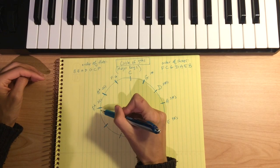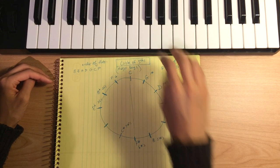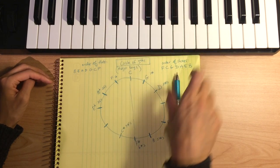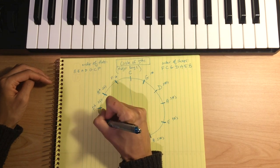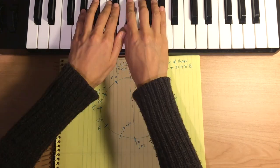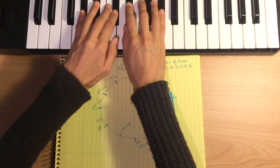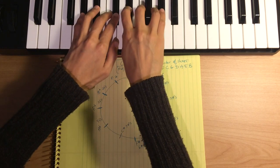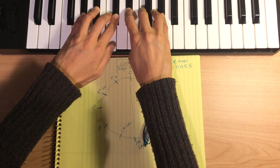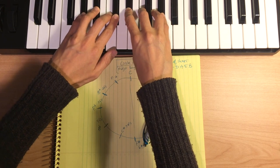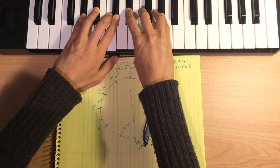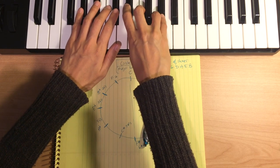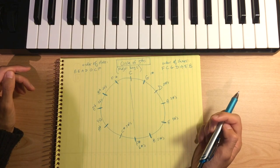Going up a fourth from E flat — one, two, three, four — we land on A flat. A flat major has four flats: B flat, E flat, A flat, D flat. Remember, scales with flats and scales with sharps follow the same major scale pattern: whole step, whole step, half step, whole step, whole step, whole step, half step — this is for all major scales.